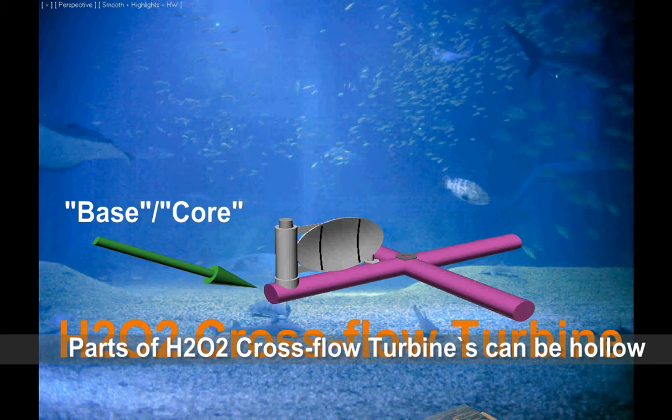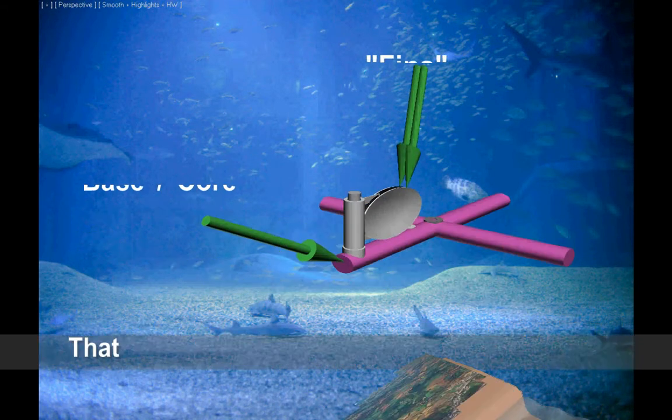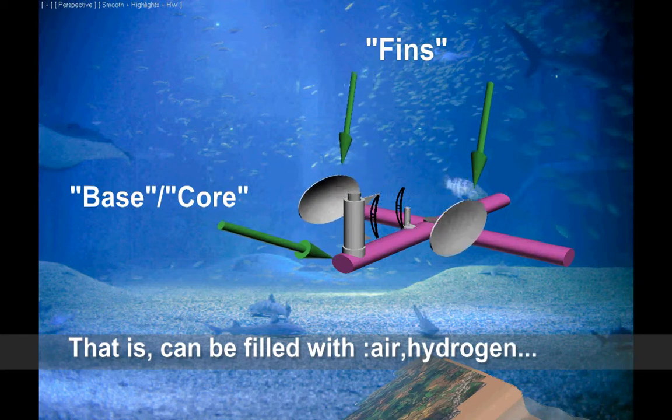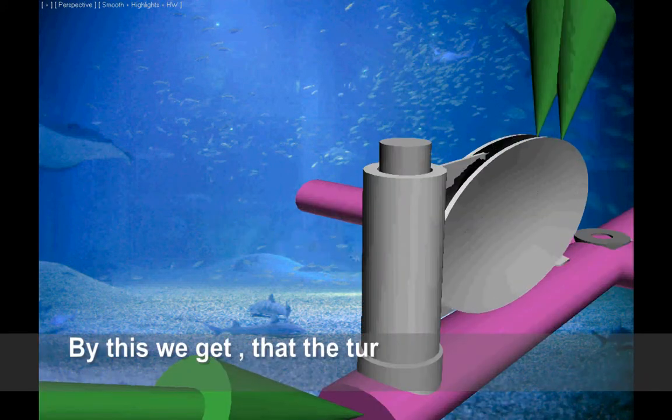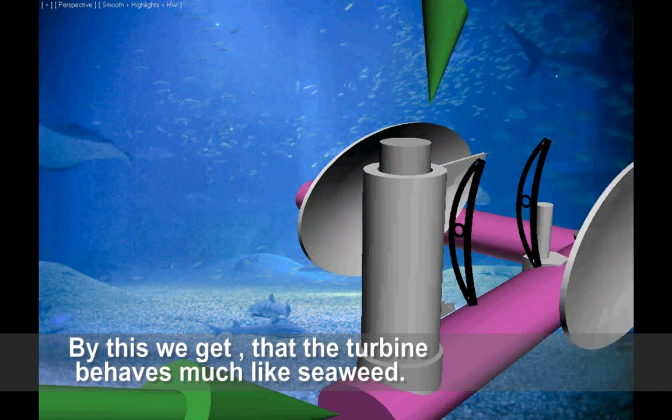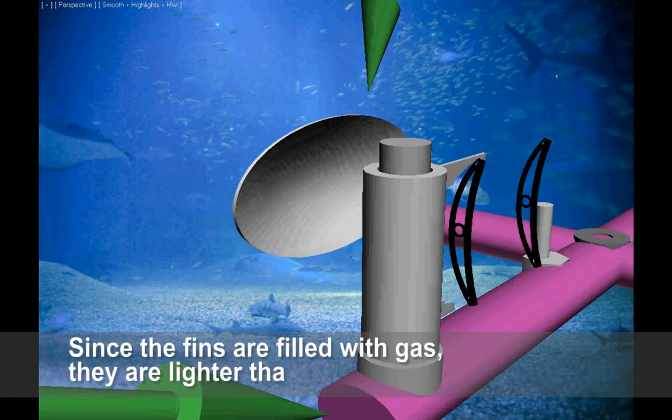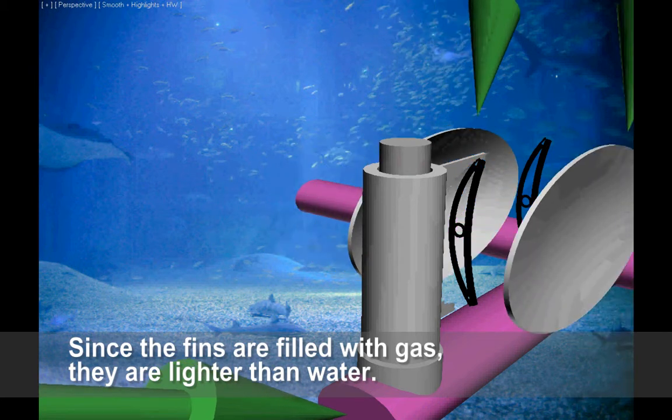Parts of H202 Cross Flow Turbines can be hollow. That is, can be filled with air, hydrogen. By this we get that the turbine behaves much like seaweed, since the fins are filled with gas, they are lighter than water.